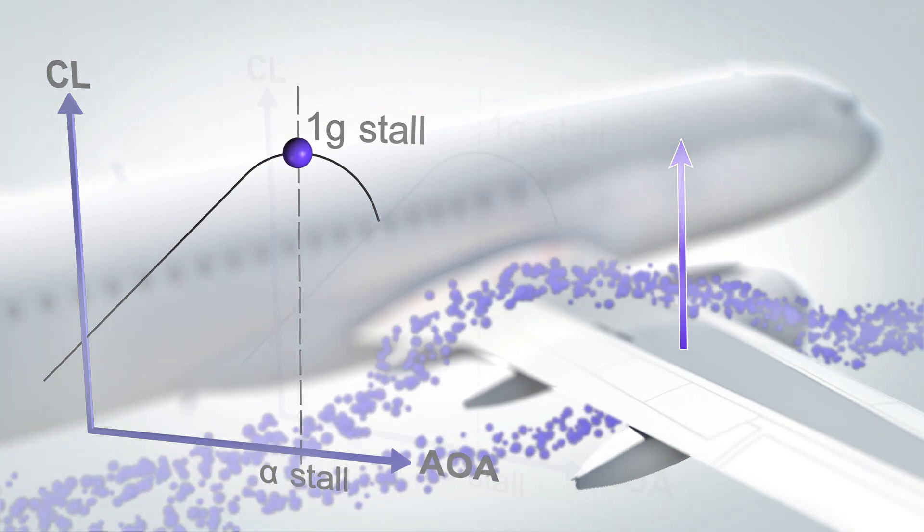Under normal law, and in manual flight, when the current angle of attack becomes more than a specific value named alpha prot, the high angle of attack protection activates. Without pilot input, the aircraft will maintain an angle of attack equal to alpha prot. The angle of attack can be increased by pilot input up to a maximum value equal to alpha max, obtained when the side stick is maintained in the full aft position.